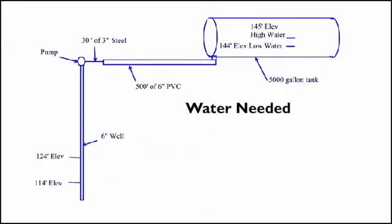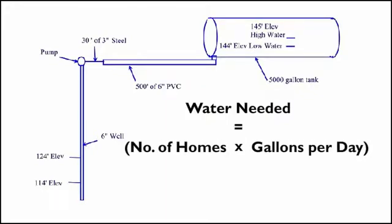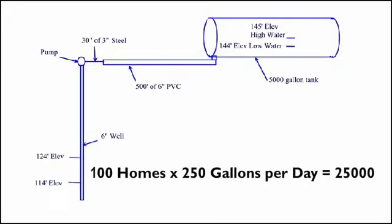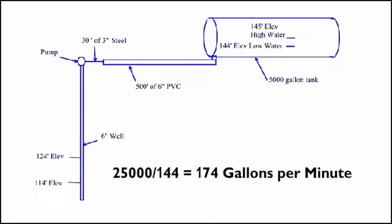The water needed is calculated as follows: the number of homes multiplied by gallons per day divided by 144. If we assume the water use of 250 gallons per day, our well needs to provide 174 gallons per minute.